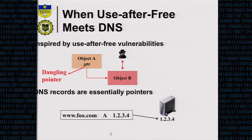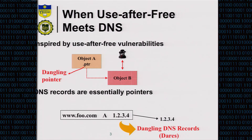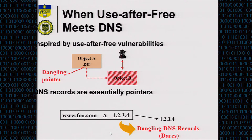For DNS records, the data field — for example, 1.2.3.4 in an A record — is basically a pointer directing you to the physical machine. What happens if this internet resource, either a physical machine or hosted service, is not there anymore? Your pointer becomes dangling. It is your responsibility to clean up the DNS record, but quite often people don't do that — because the startup is already gone, so why bother? Or they opened an online store, closed it, and the DNS record was maintained through a third-party DNS service like Dyn.